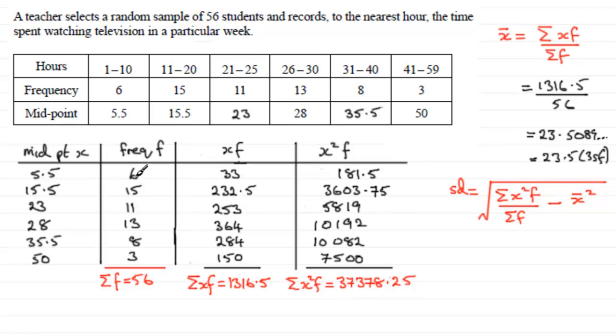5.5 squared multiplied by 6 should come to 181.5. And if you add all these values up, there you go. You've got 37378.25. So we just need to substitute this into the formula and just work it out.